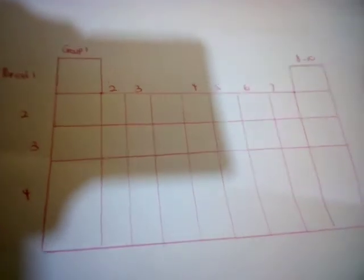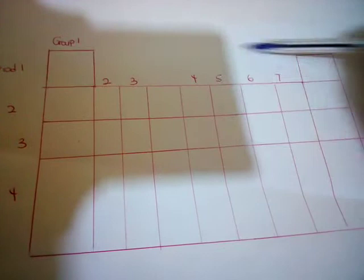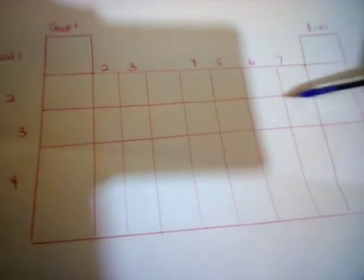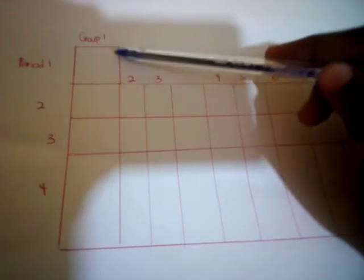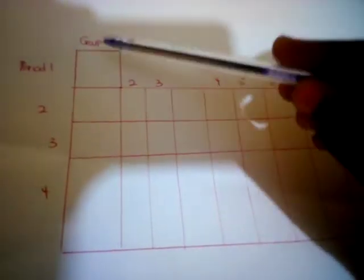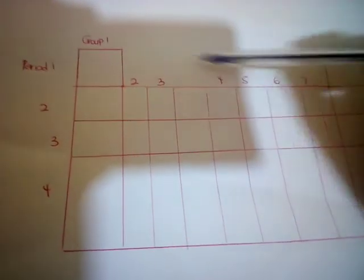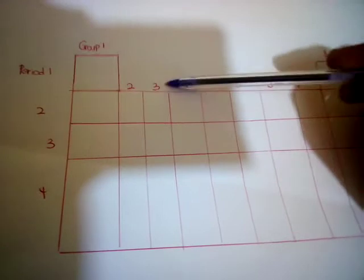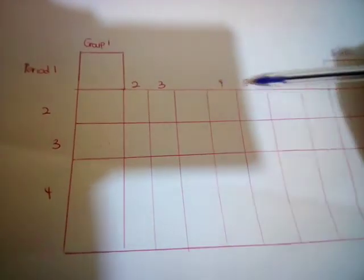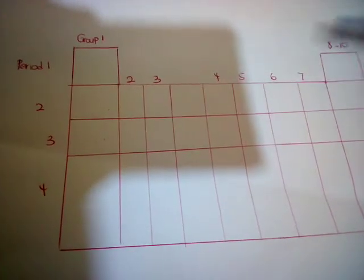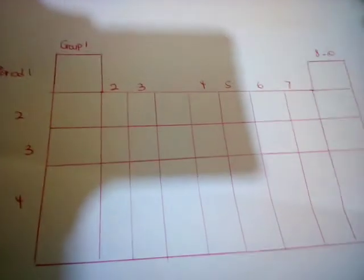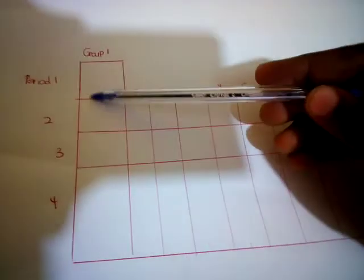So this is your first step in drawing the periodic table. You first have to draw something looking like a rectangle, then you separate it into 9 parts — 1, 2, 3, 4, 5, 6, 7, 8, 9. And then you separate here to be 4 more. When you're done, you make your group 1, group 2, group 3, then you leave a space and come to 4, 5, 6, 7, then 8 to 10. It'll make your work more neat when you leave some space.